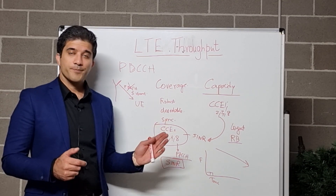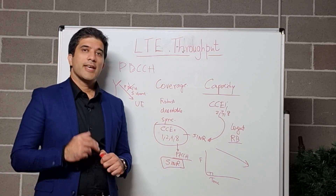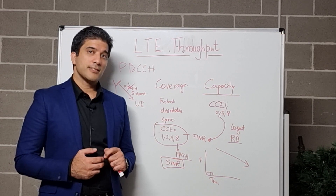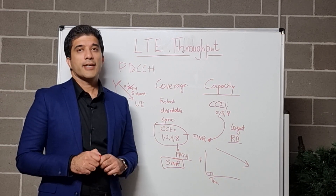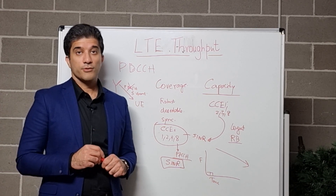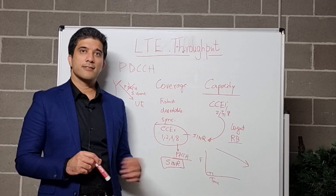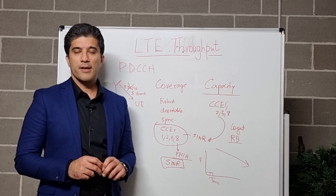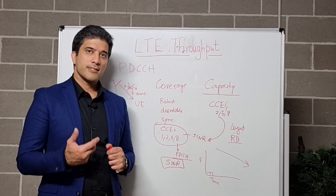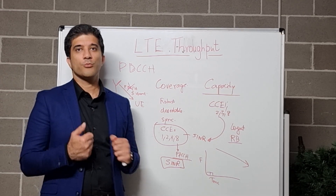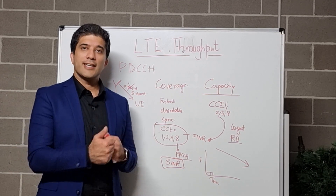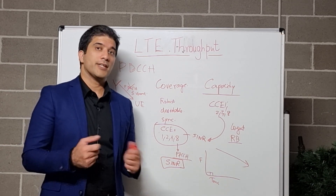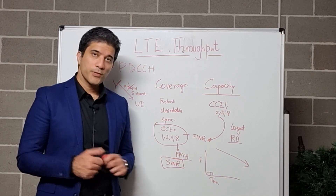Today we have seen the PDCCH, which is our downlink control channel. In one of my next videos I will go through the uplink control channel, PUCCH, and how PUCCH capacity and correct detection can also degrade your throughput. One side item: if you have PDCCH capacity or coverage problems, this can also cause latency issues in your network. To improve latency and response time — from scheduling requests to data being received — you always need to monitor your PDCCH capacity and correct detection.